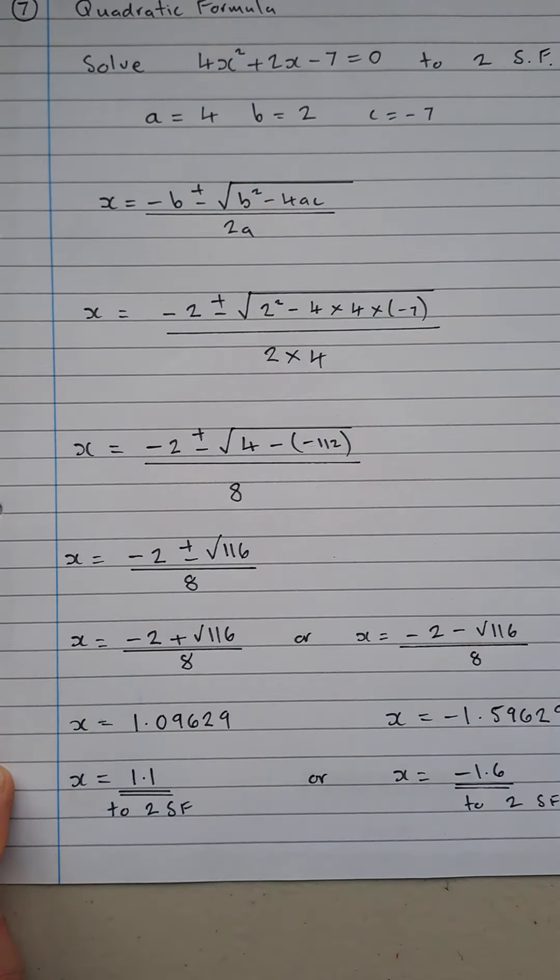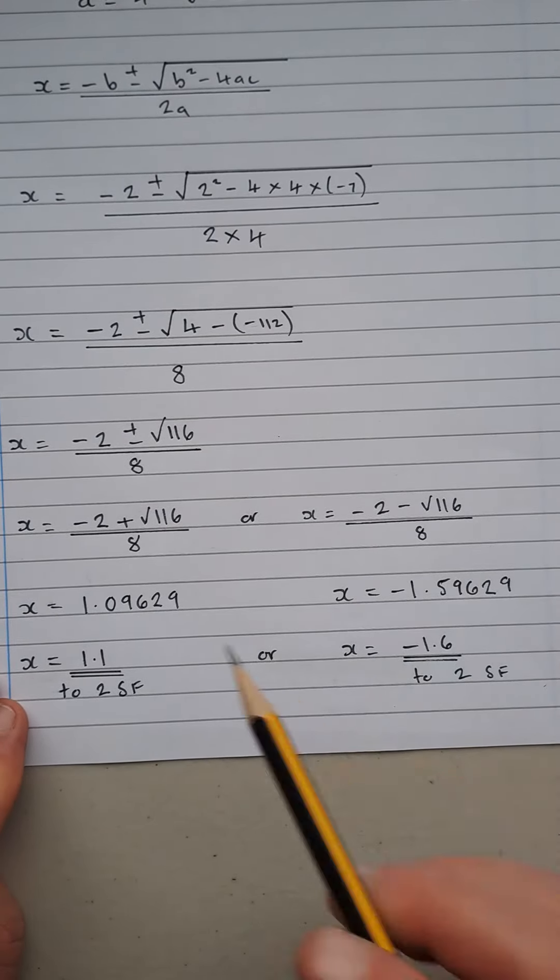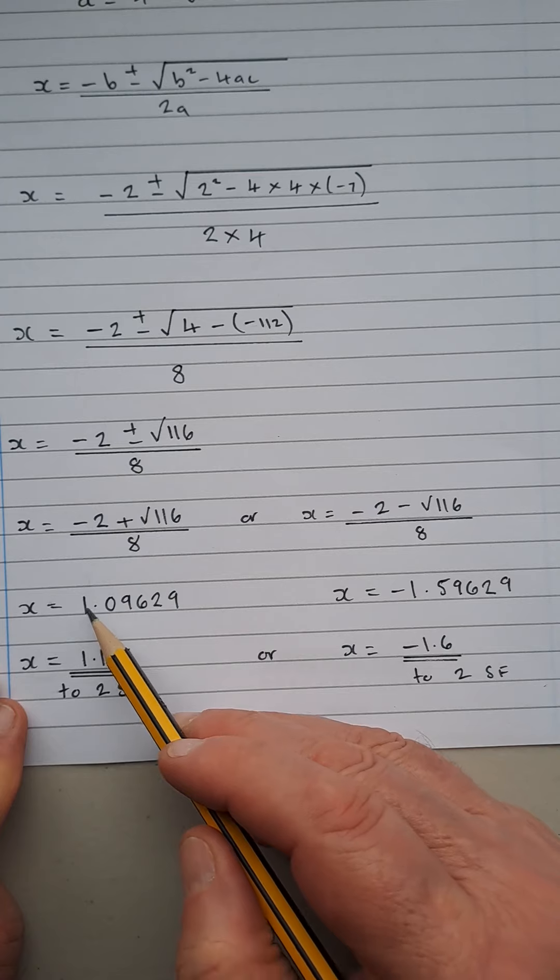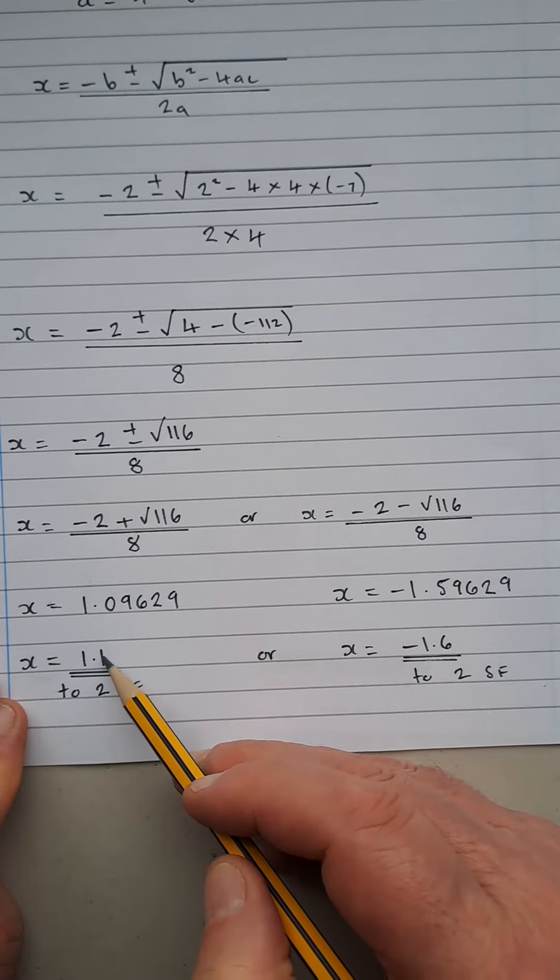our two solutions and don't forget they want them to two significant figures. So for this one here, that's your first, that's your second, that 9 makes that a 1, so it's 1.1.